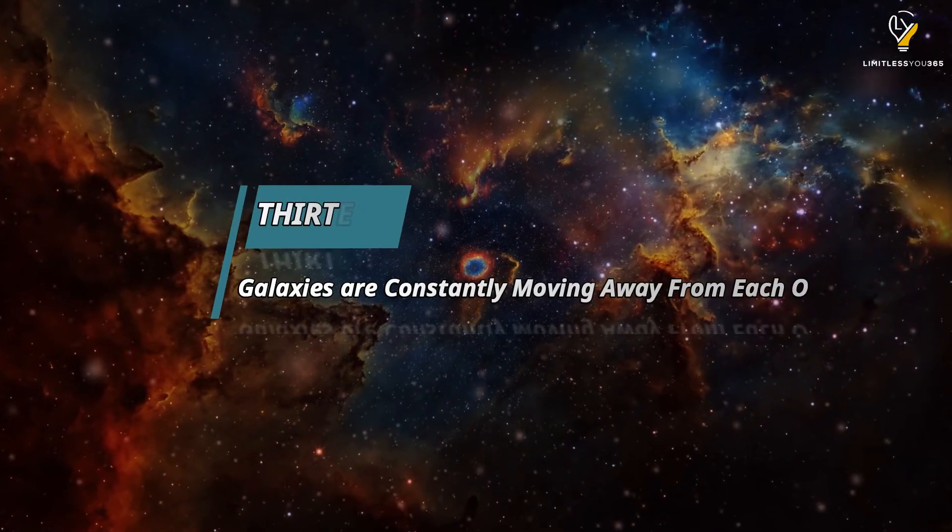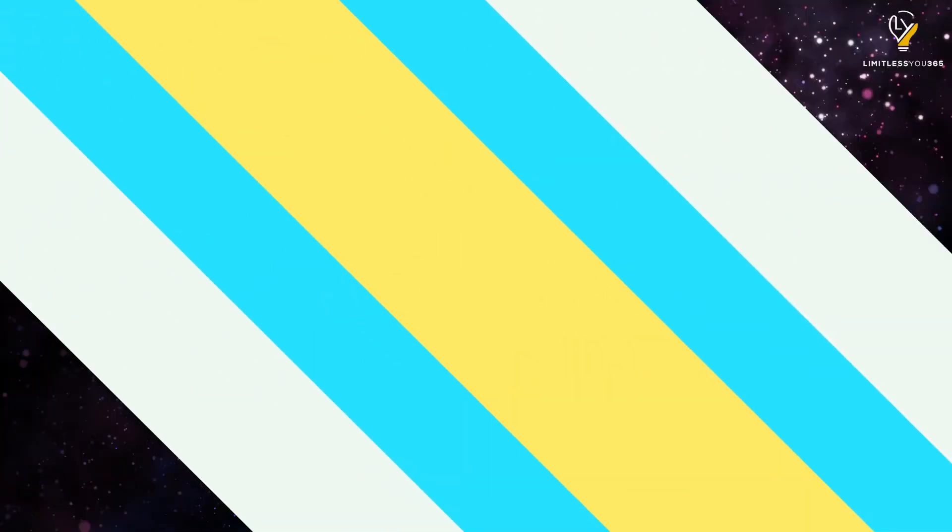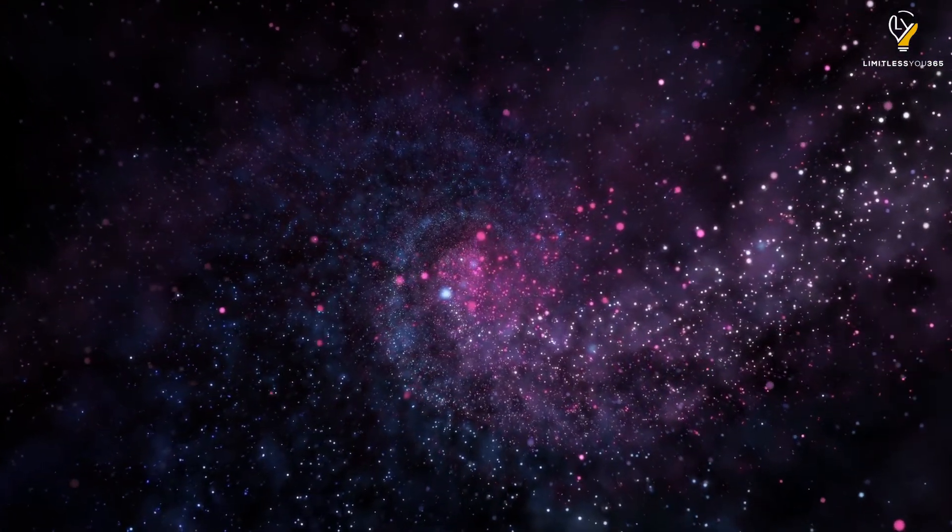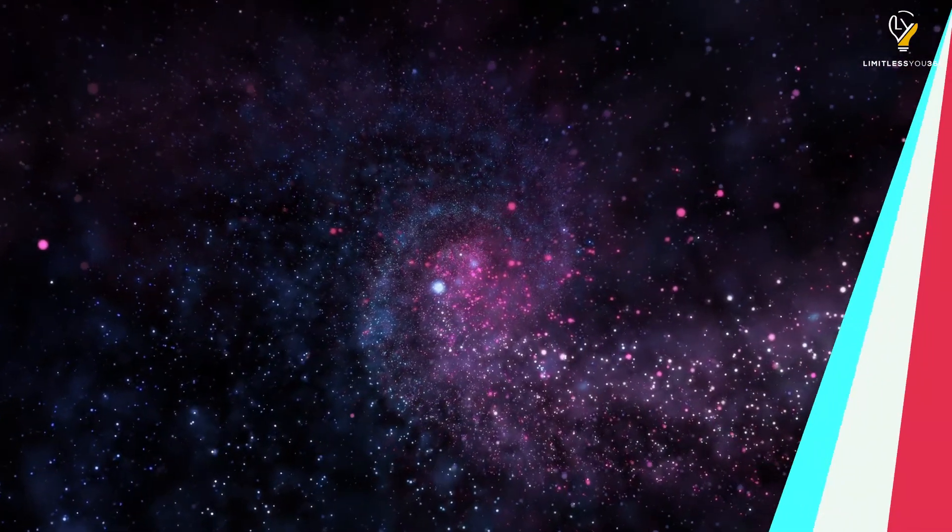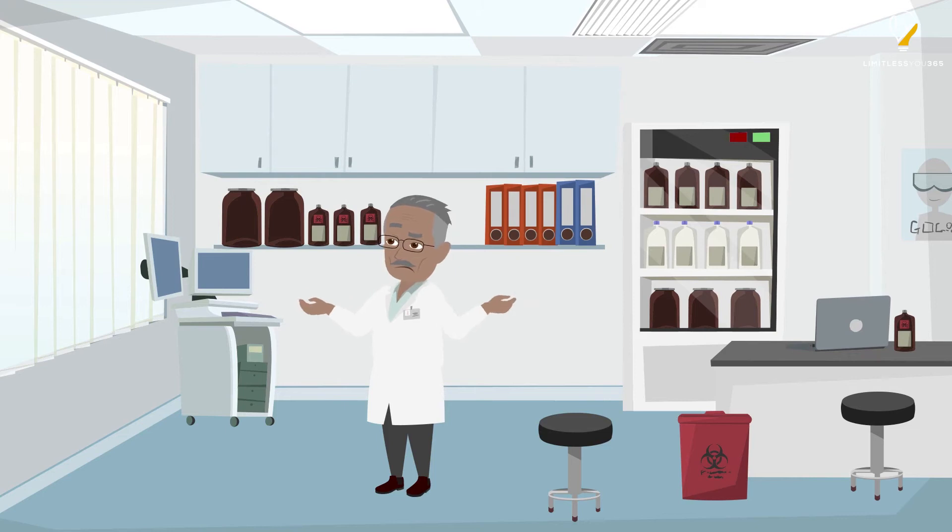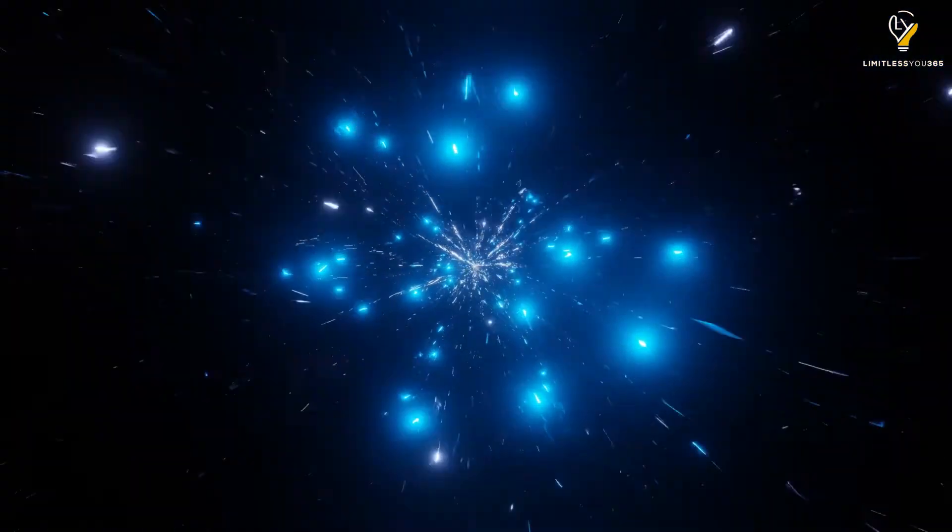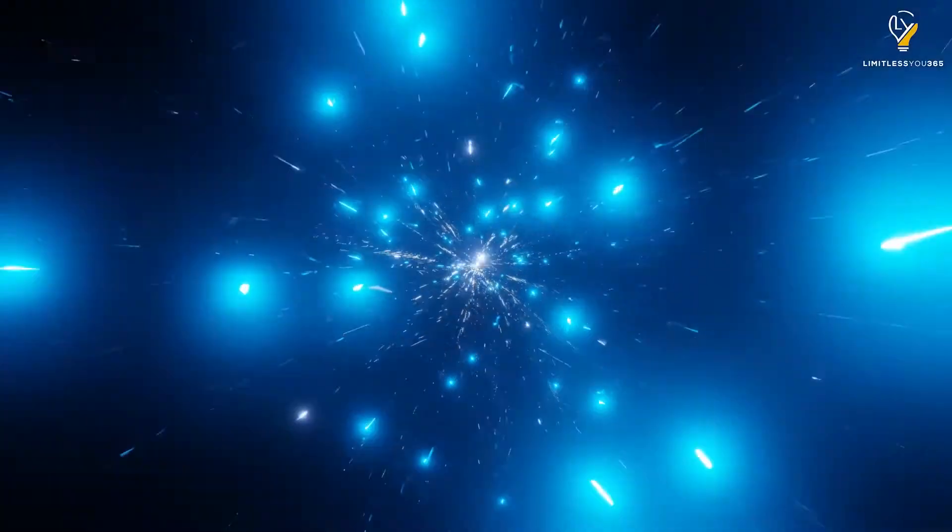Number thirteen: Galaxies are constantly moving away from each other. Just like everything else in the universe, galaxies are constantly in motion. They're moving away from each other at an alarming rate, and scientists don't know why. In fact, they don't even know if it will ever stop. This means that in the future, all the galaxies will be so far apart that they'll be impossible to see with the naked eye.